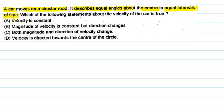A car is moving on a circular road and it describes equal angles in equal time intervals. Which of the following statements about the velocity of the car is true?